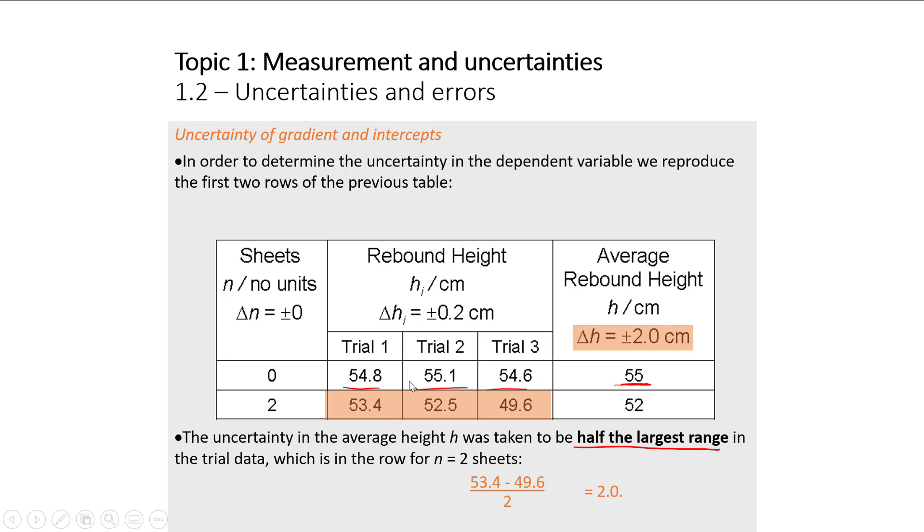Really we should be doing that for each individual variation because each individual variation shouldn't have the same uncertainty. One other thing to note, this should really be written as 2 centimeters, not 2.0, because we really only need one sig fig in this uncertainty. And also, our final average measurement is only precise to the nearest one, so our uncertainty should be precise only to the ones digit. We don't need that tenth place.